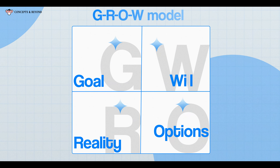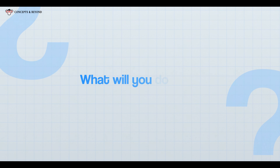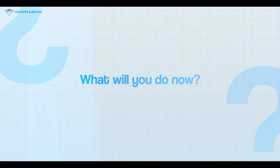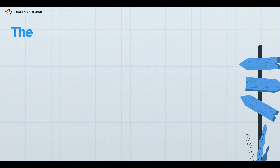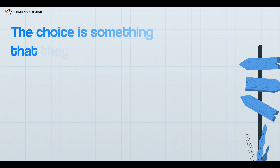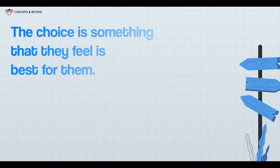The W stands for will. After you have a list of options and pros and cons of each option, the question you should ask is: so what will you do now? This will help the other person feel in control of the situation and feel that they have a choice to pick from — a choice that they feel is best for them.